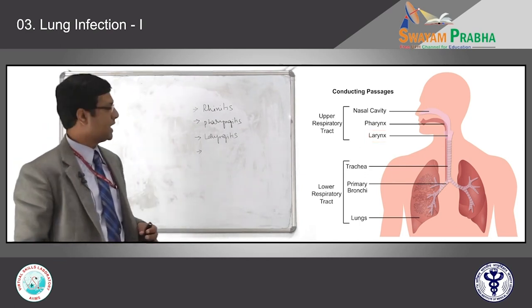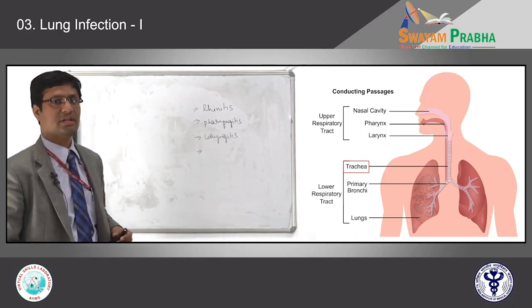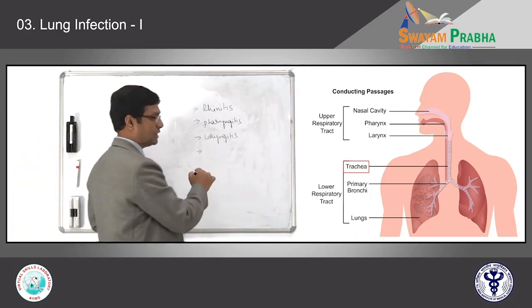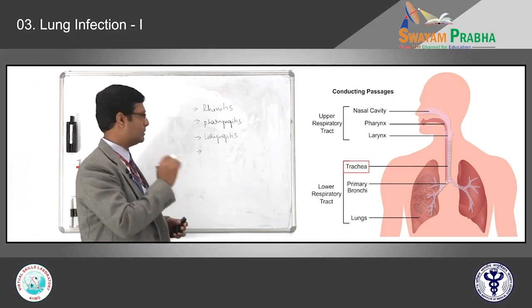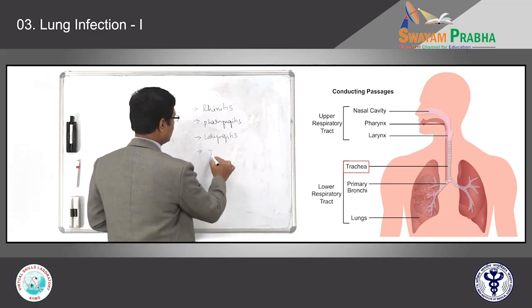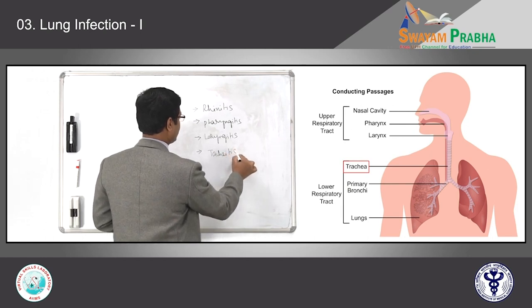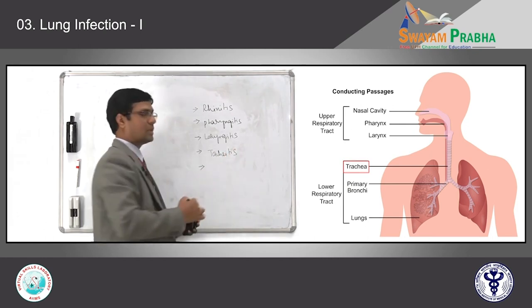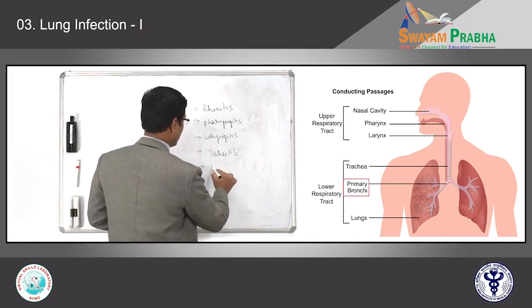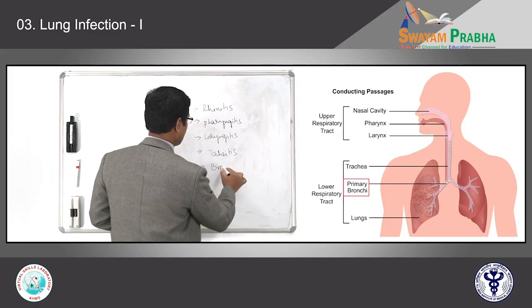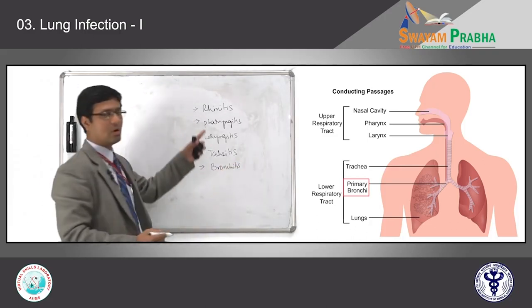Below the larynx, we have the trachea and its branches — the tracheobronchial tree. When there is infection limited to the trachea, we call it tracheitis. Infection limited to the major bronchus, we call it bronchitis. All of you should observe there is the suffix '-itis' in each term.